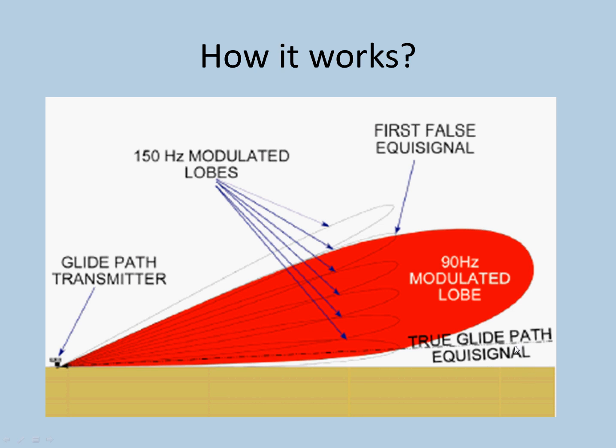The problem with the glide path is the 90 Hz lobe is a big lobe with small 150 Hz lobes. So at a certain point, if you can see, this curve is meeting the true glide path, that is fine. But again at the curve here, there is another false equi signal. There is a false lobe.